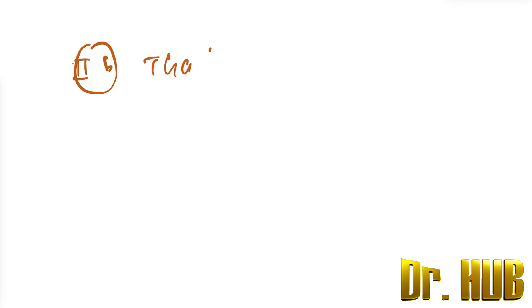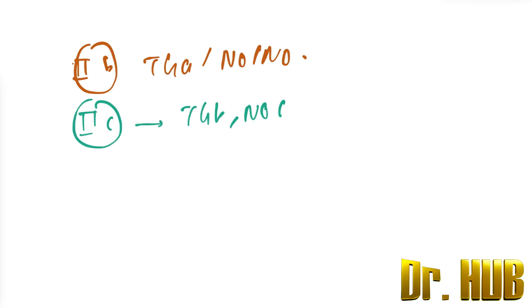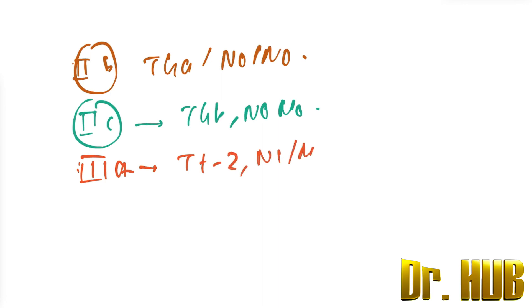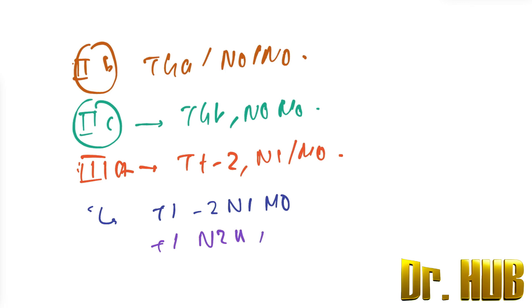In the 8th edition, Stage 2B is T4A, N0, M0 and Stage 2C is T4B, N0, M0. Stage 3A in the 7th edition is T1 to T2, N1, M0. In the 8th edition, Stage 3A is T1, N1, M0 or T1, N2A, M0.